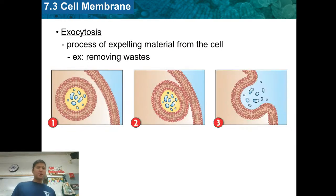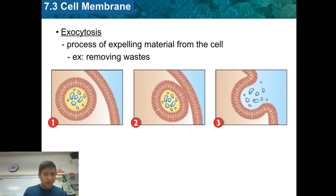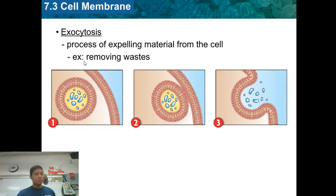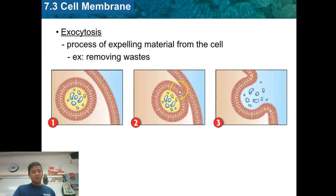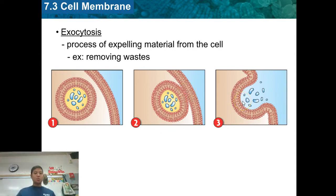Exocytosis is the opposite of endocytosis — if endocytosis takes things in, exocytosis pushes things out. In exocytosis, a vesicle fuses with the lipid bilayer and releases those wastes outside of the cell.